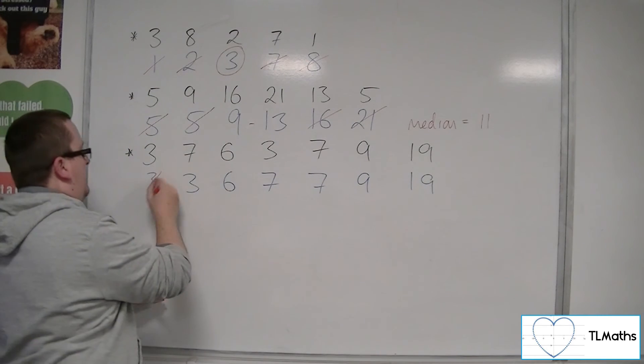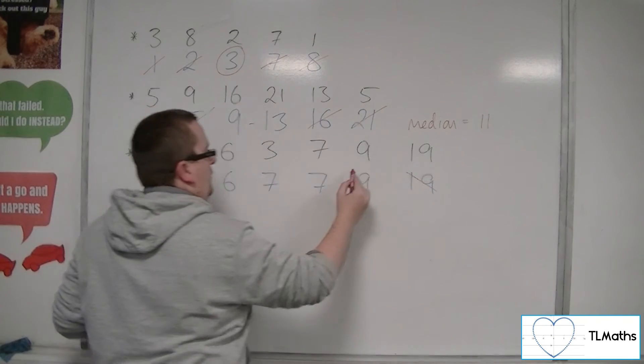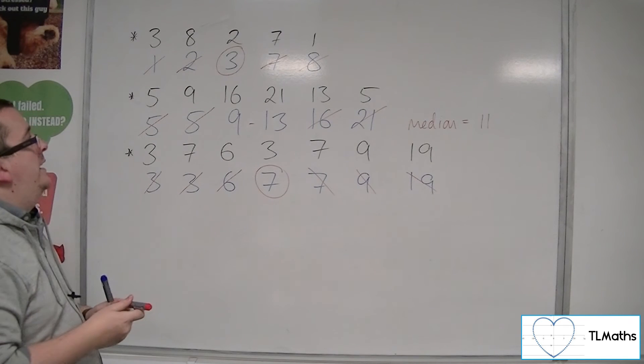So then starting from the left and the furthest on the right, cross those off, then the next two, then the next two, and so the median in the final case is 7.